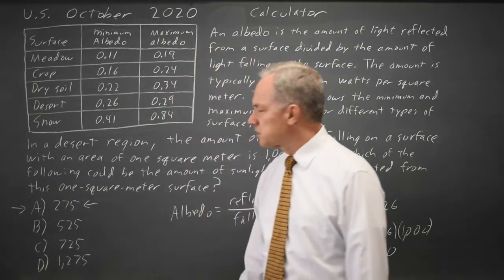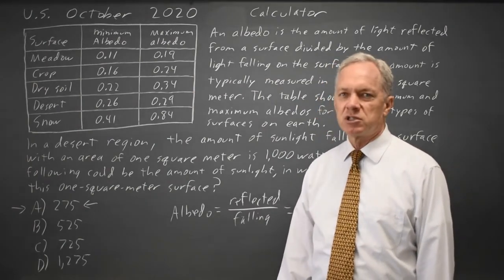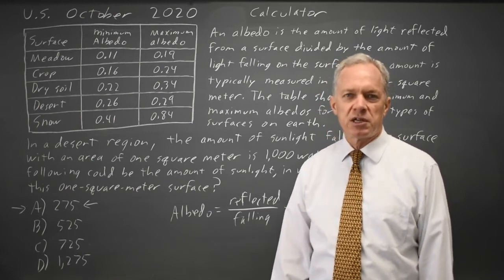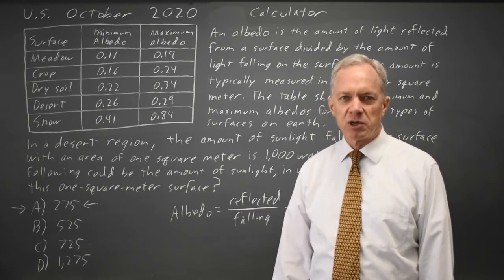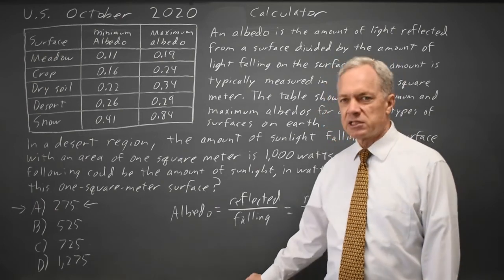Same for 725, that's only in the range for snow. I get 0.725, which is too large for anything but snow. And 1,275 is not possible. We're not going to reflect more light than falls on the surface. So the correct answer here is choice A.